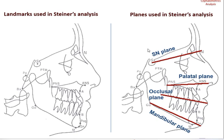We shall now see the different landmarks and planes used in Steiner's analysis. Since we've already gone through the landmarks in the previous lecture, you should be able to identify and locate them by yourself. Starting with nasion all the way to basion, there are several landmarks: nasion, ANS, point A, point B, pogonion, menton, gonion, articulare, pterygomaxillary fissure, sella, ANS, PNS, and so on.